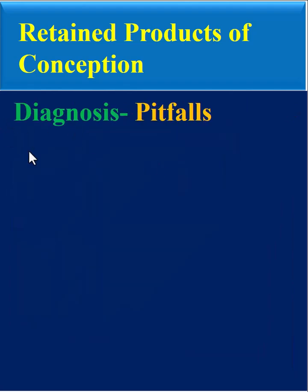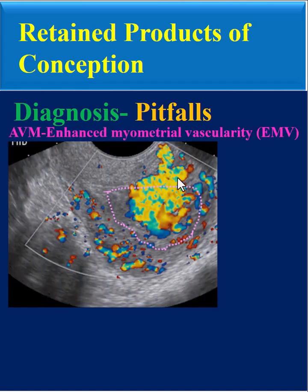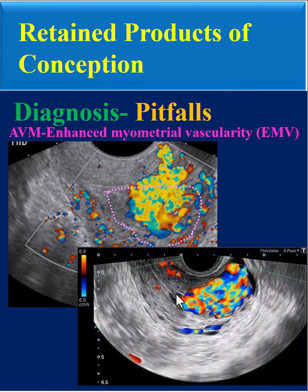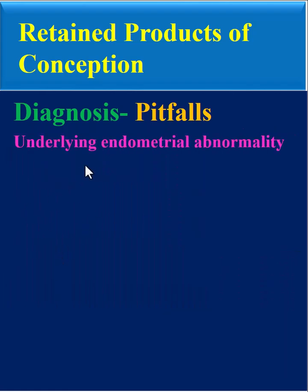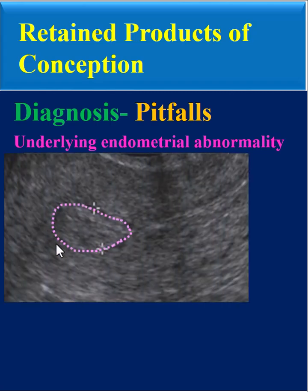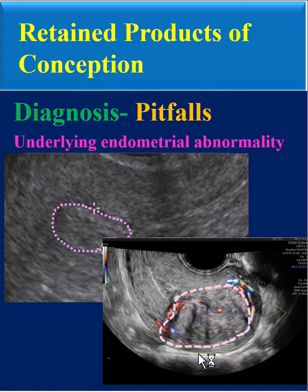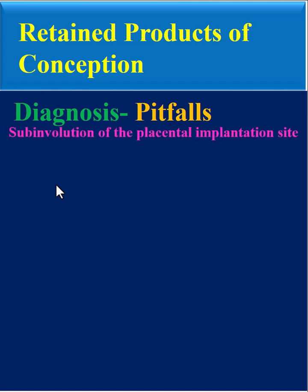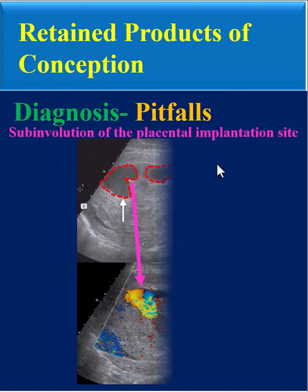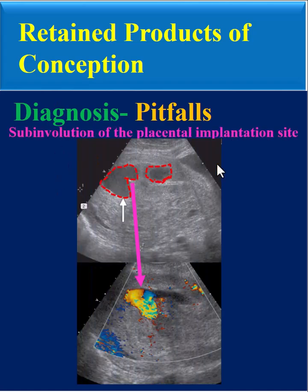It is very important to know the pitfalls of diagnosis. Especially, we must differentiate enhanced myometrial vascularity from arteriovenous malformation. We must not mistake underlying endometrial abnormalities like endometrial polyp and sub-endometrial fibroma with RPOC, and we must also know sub-involution of the placental implantation site, which is a transient and physiologic change after delivery.